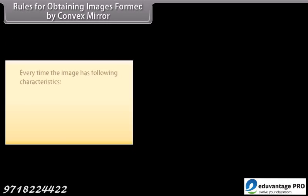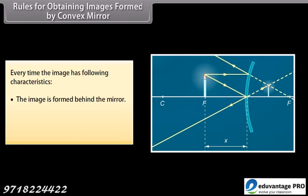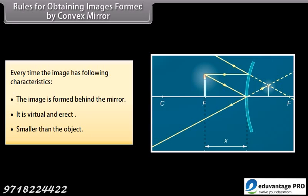Every time, the image formed by a convex mirror has the following characteristics: the image is formed behind the mirror, it is virtual and erect, and smaller than the object.